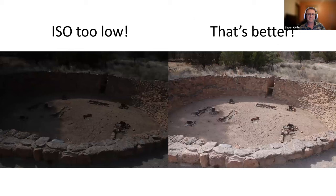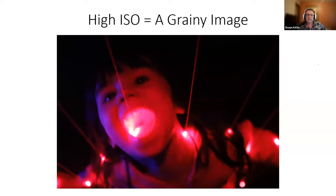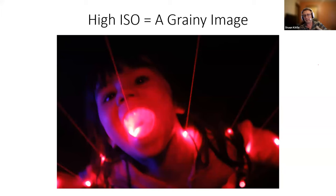Here's an example taken at Bandelier National Monument. On the left, the ISO was way too low for the conditions — see how dark it is? Then I turned the ISO up a couple notches and immediately the image is much brighter. And this photo of my daughter Lucina at Meow Wolf in Santa Fe shows grain — look at her cheeks, you can see little dots. That's from a very high ISO. But the room was pitch black except for laser lights, so a high ISO was the only way to get a photo at all.